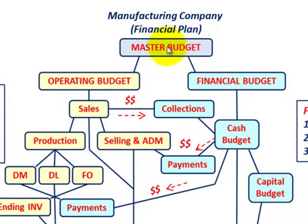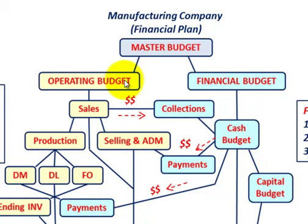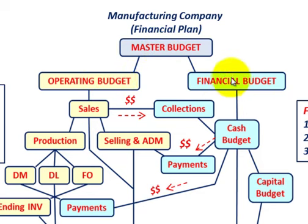What we're going to be going over here is the master budget, or really the financial plan, for a manufacturing company. Through this master budget, you integrate and coordinate all the activities of the various functional areas of the company. The master budget is broken down between your operating budget and your financial budget — those are the two main budgets under the master budget.